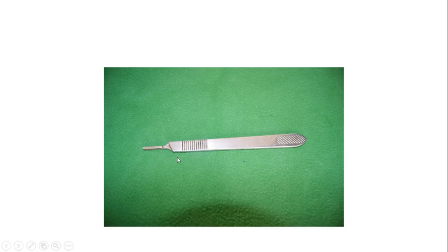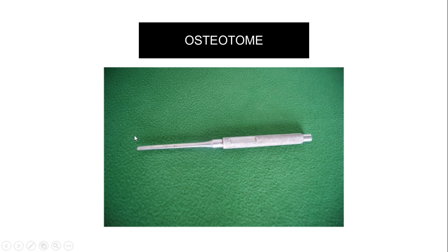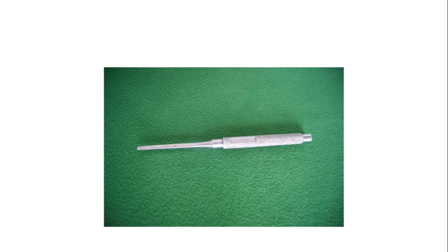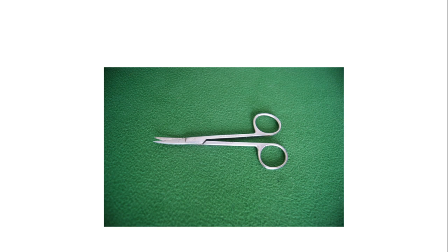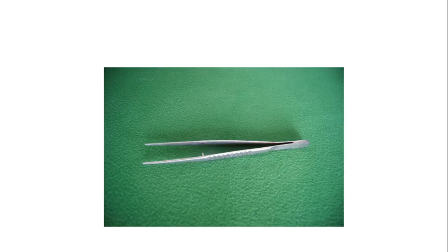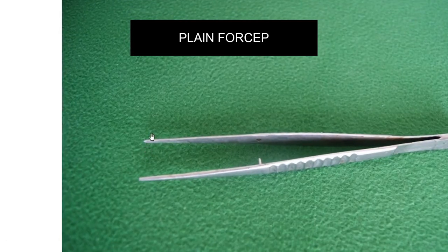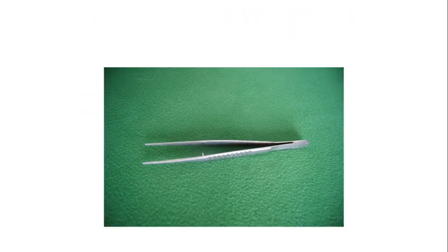This is the trocar. Its most important use is in Caldwell-Luc operation, where a small opening is made in the canine fossa. It is used to make small openings, for example in antrostomy. This is the fine tissue forceps — a plain forceps. As you can see, there is no tooth-like projection, so it should be differentiated from tooth forceps. Both types are used for holding tissue.